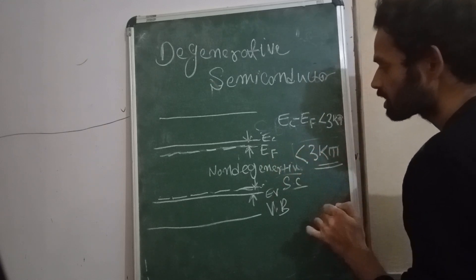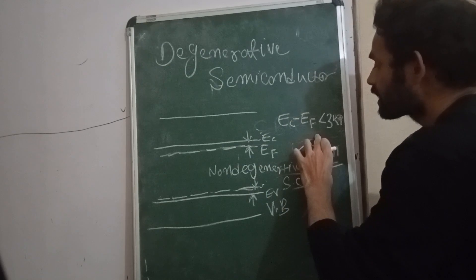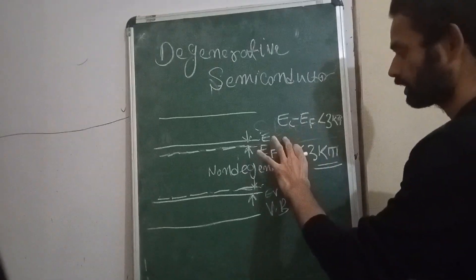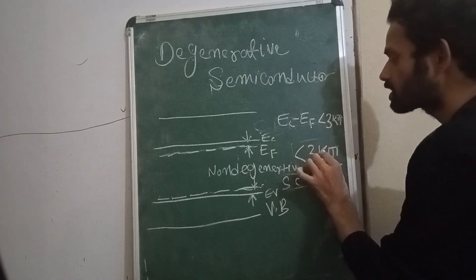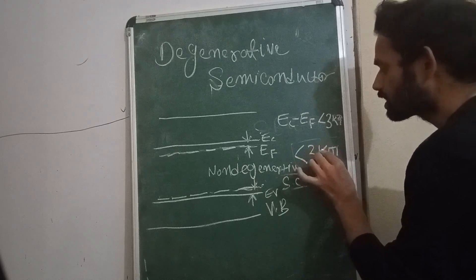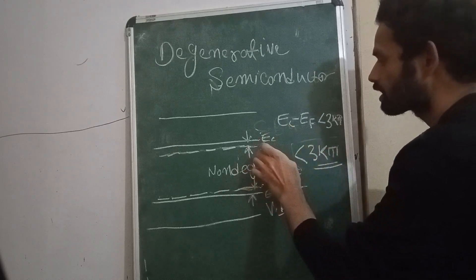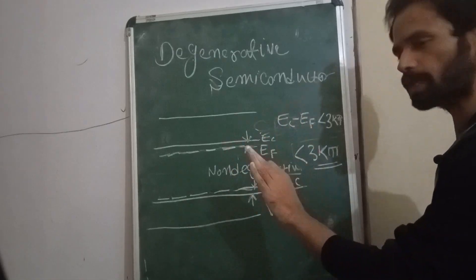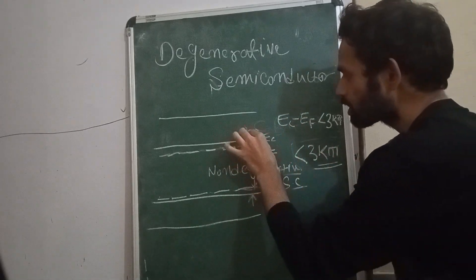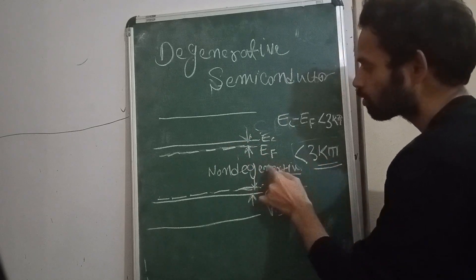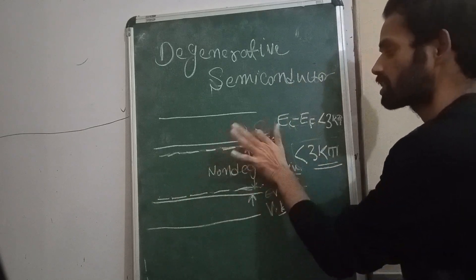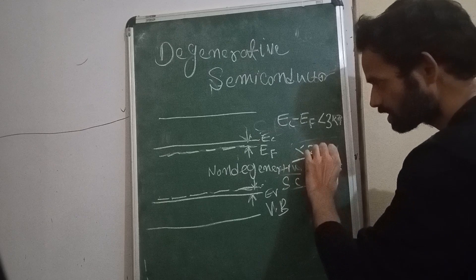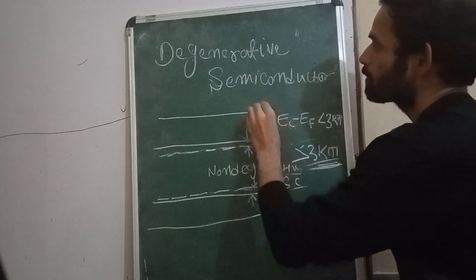What is this 3kT? 3kT is nothing but the difference between the Boltzmann approximation and the Fermi-Dirac distribution function — that difference is about 5%. If this gap is less than 3kT, the semiconductor is non-degenerative. Once it exceeds 3kT, it becomes a degenerative semiconductor.